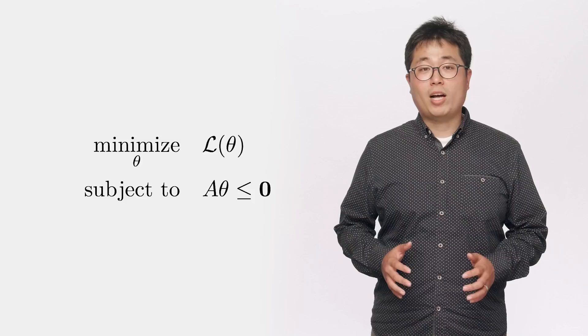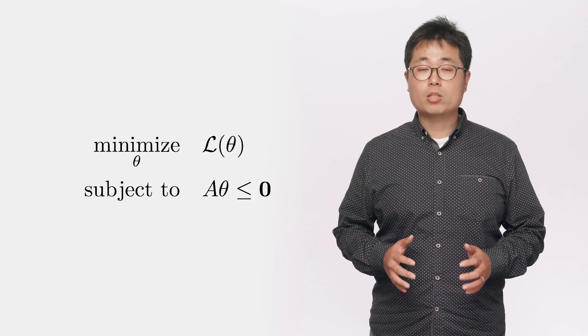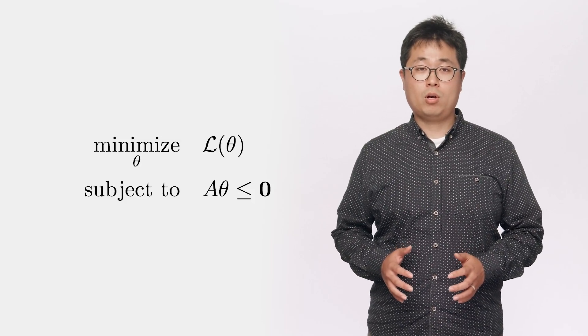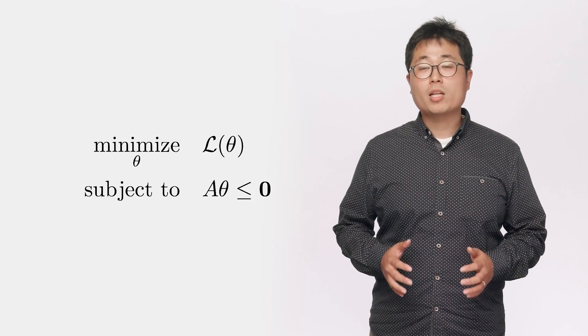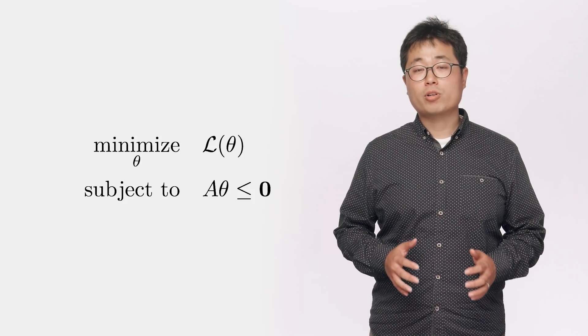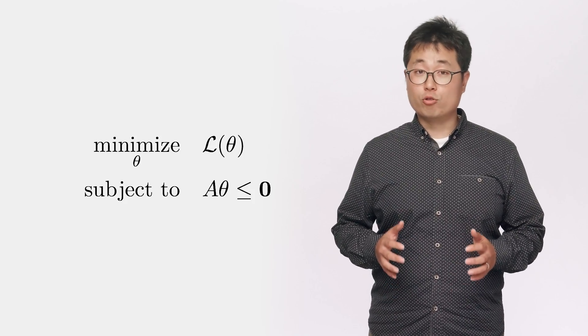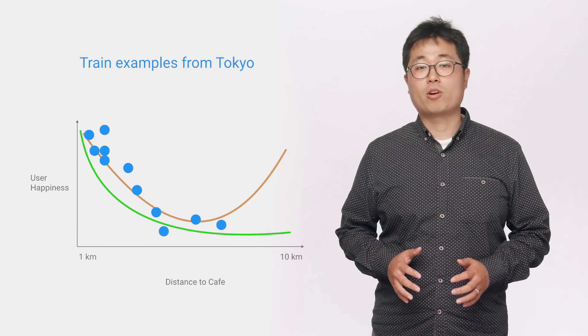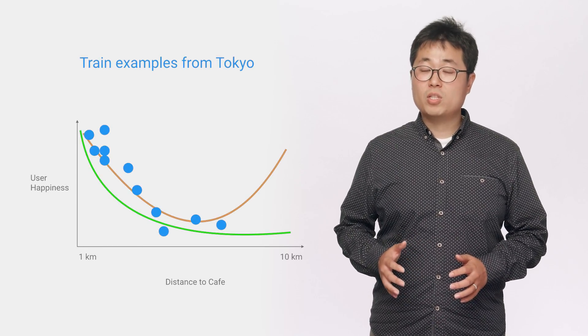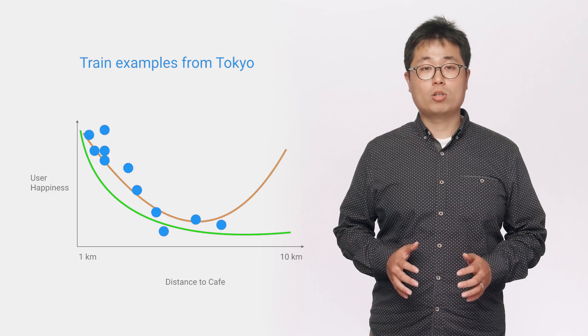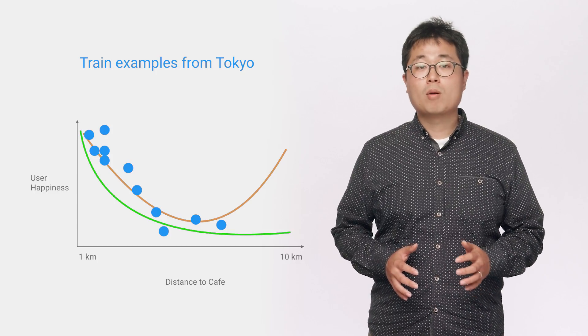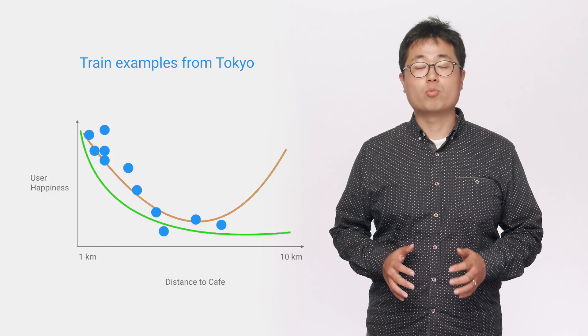Under the hood, we express monotonicity as constraints on the lookup table parameters. We formulate the machine learning task as a constraint optimization problem and use TensorFlow to train it. After the training is done, the trained model satisfies any monotonic relationship you choose. Going back to the coffee shop recommendation example, you can specify that the recommendation score decreases with the distance but increases with the coffee quality.